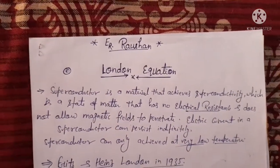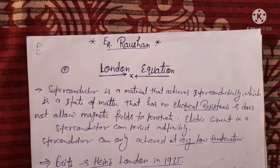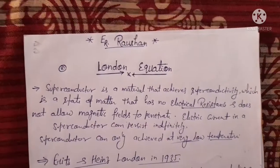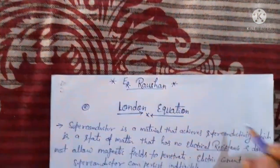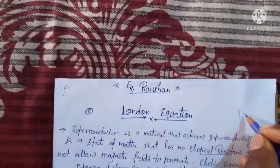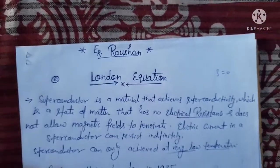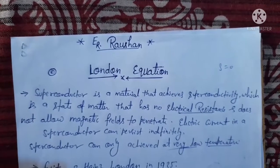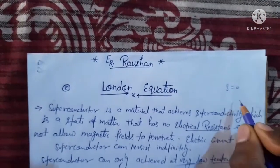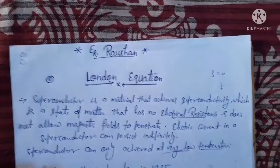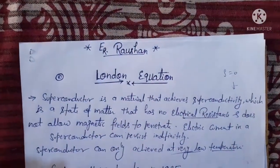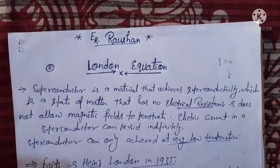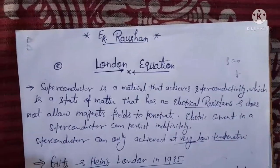One of the necessary facts about the conditions of the superconductivity state is that magnetic flux density equals zero. Magnetic flux density equals zero inside the superconductor — that is, the magnetic flux can't penetrate inside the superconductor. The magnetic flux doesn't suddenly drop to zero at the surface.